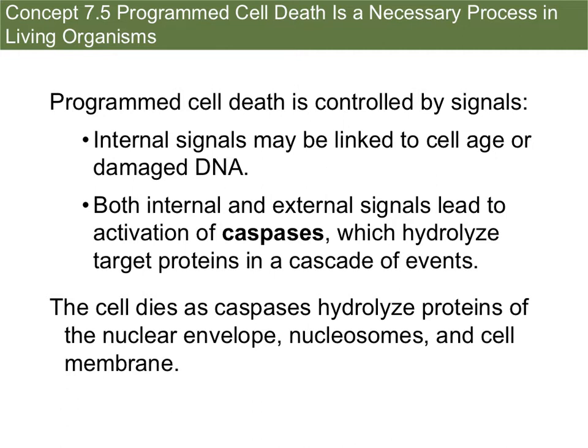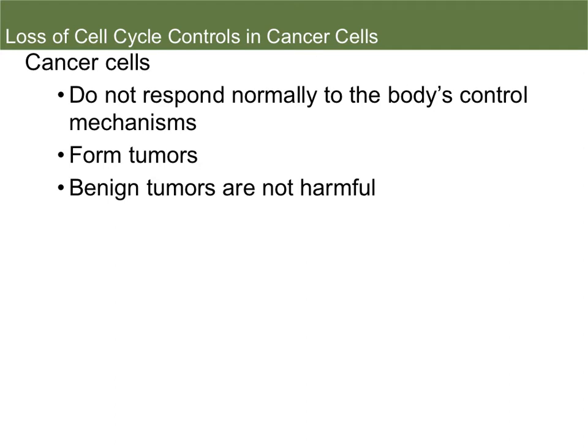This cascade kind of starts a waterfall of reactions that causes apoptosis. Cell death happens as the caspases hydrolyze proteins of the nuclear envelope, nucleosomes, and cell membrane, essentially causing the cell to burst. Now, when the cell cycle can't be controlled or isn't controlled, this is what forms cancer cells.